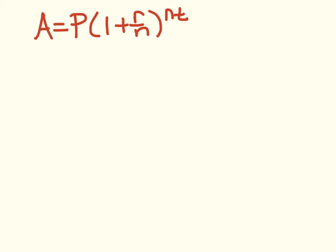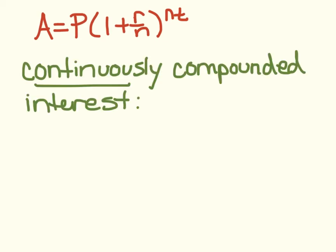And because we don't have an N for continuously, if we use the natural base E, that will give us the actual value. So, the equation you need to know for continuously compounded interest is A equals P times E to the RT.